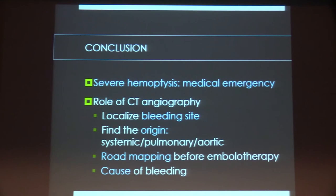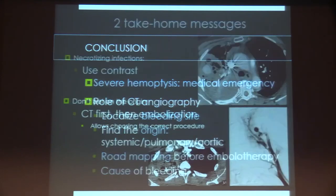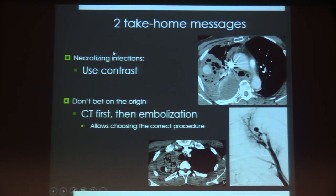In conclusion, severe haemoptysis is a medical emergency. The first objective is to detect the site of bleeding to protect the healthy lung. CT angiography plays a very important role: it localizes the bleeding site and identifies the origin — systemic circulation is the first cause, but in some patients bleeding comes from the pulmonary arteries or aorta. CT angiography can also serve as a roadmap before embolotherapy. Take-home messages: for necrotizing infections, always use contrast to depict false aneurysms; and don't assume the origin — take a few minutes to review the CT scan because it allows choosing the correct procedure.